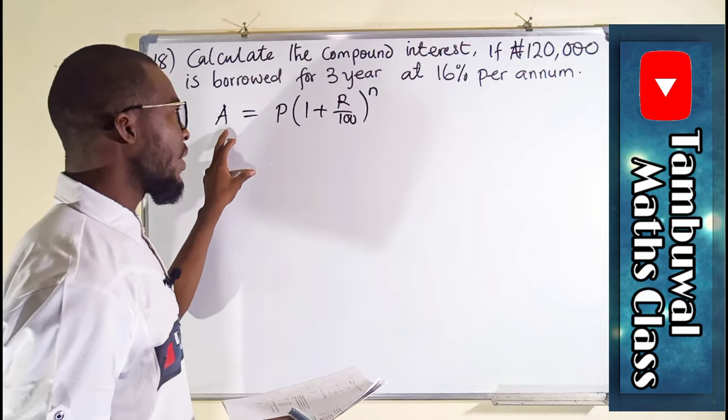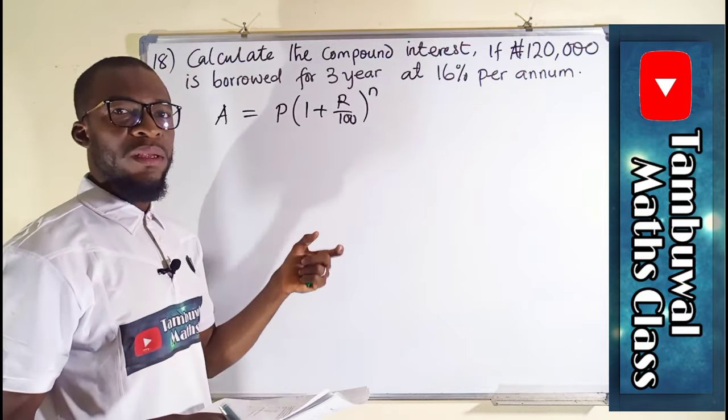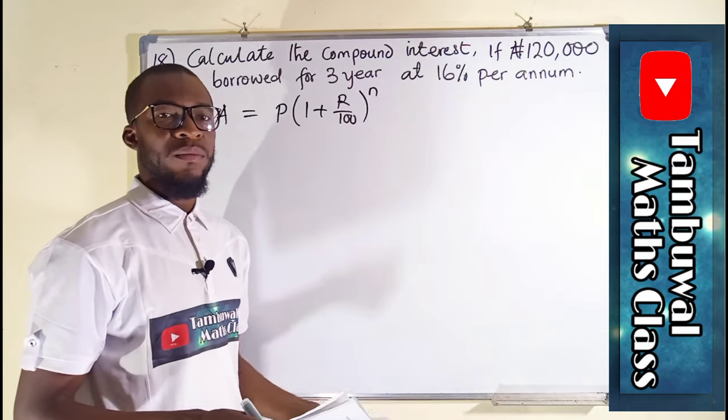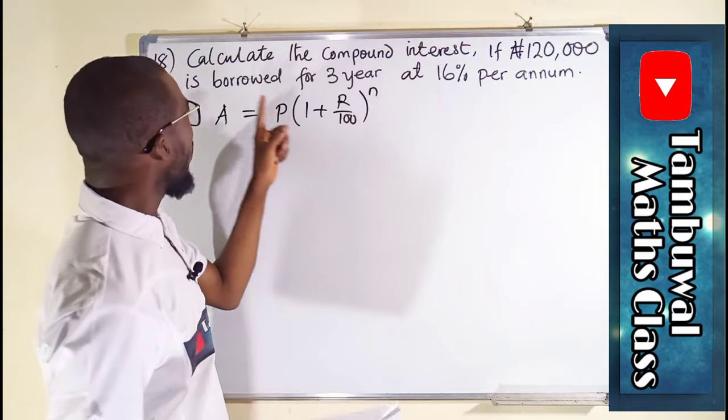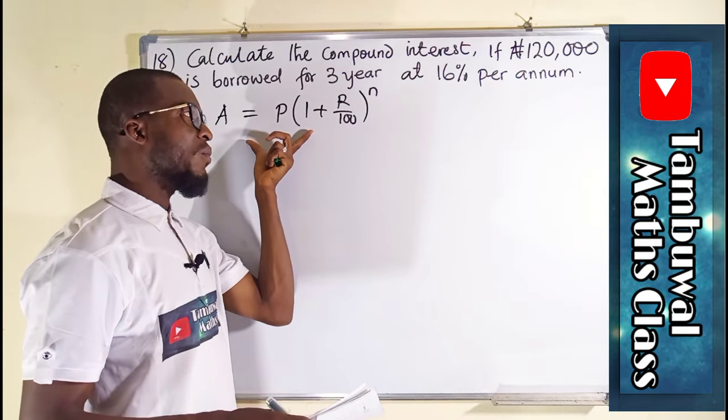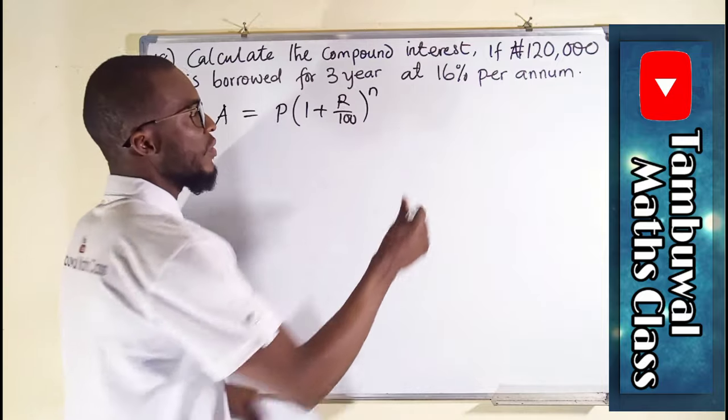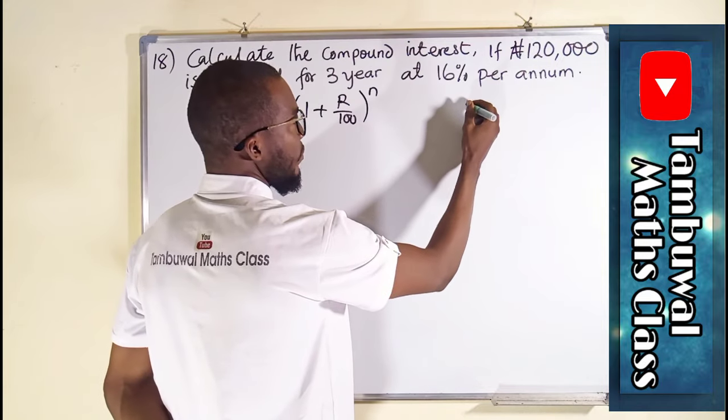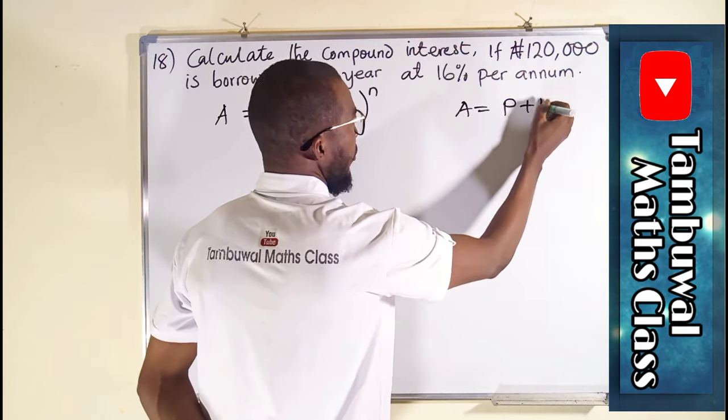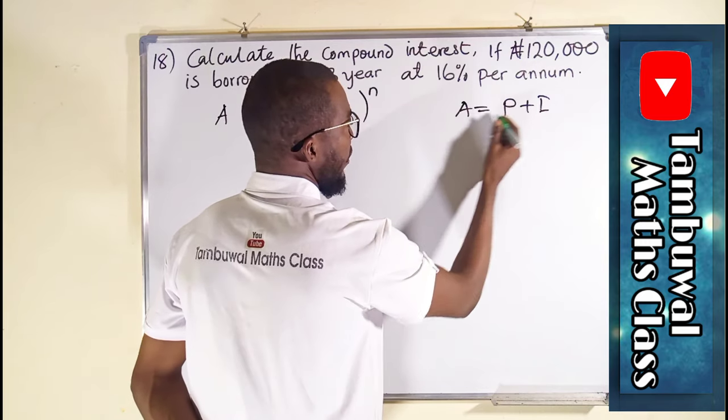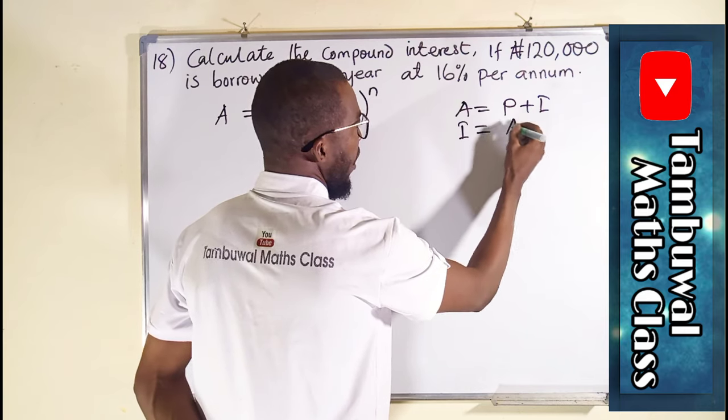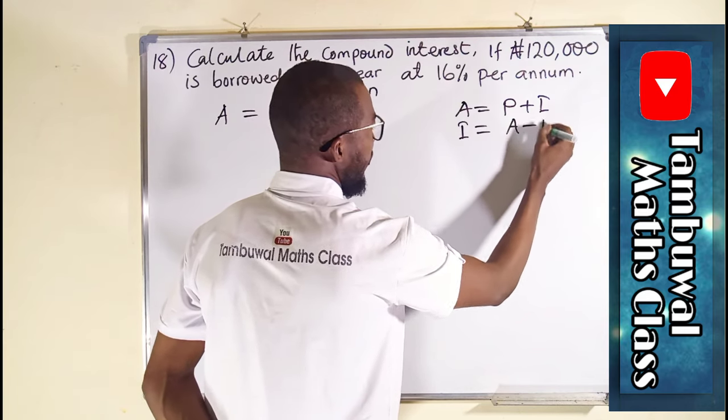This formula is used in determining the total amount for a specific time. But what we are asked to find from the question is the interest. So after finding this, we can use this to find the interest because we know that amount is equal to the principal plus the interest. Therefore, we can say that interest is equal to amount minus the principal.